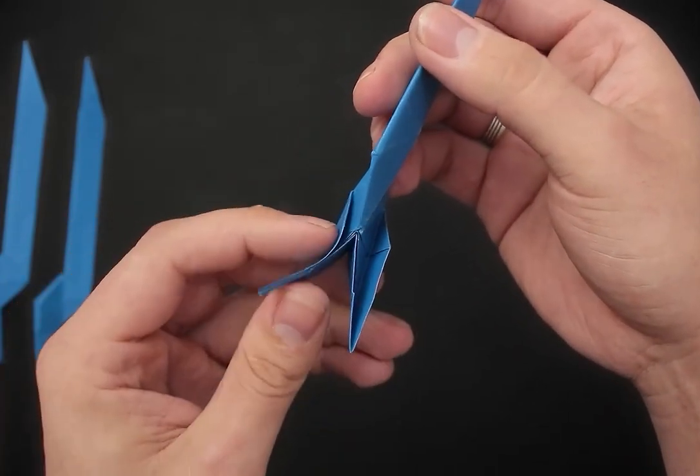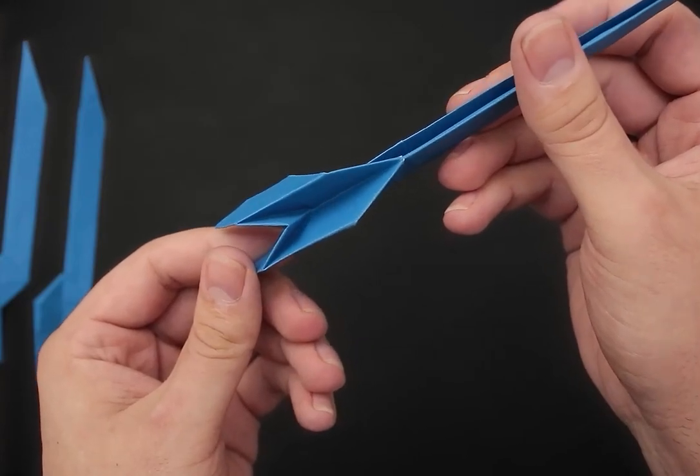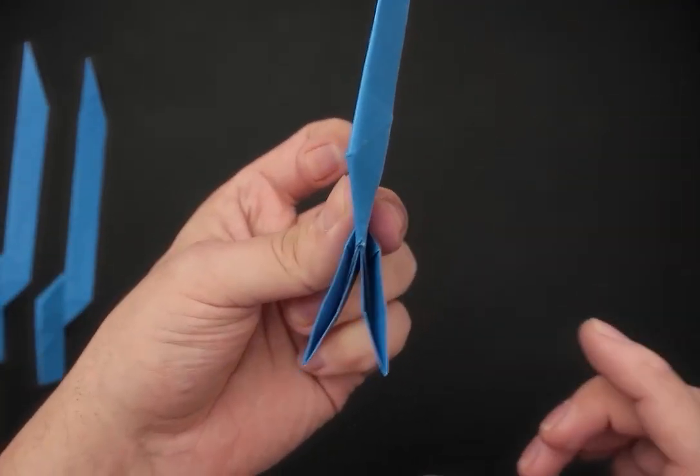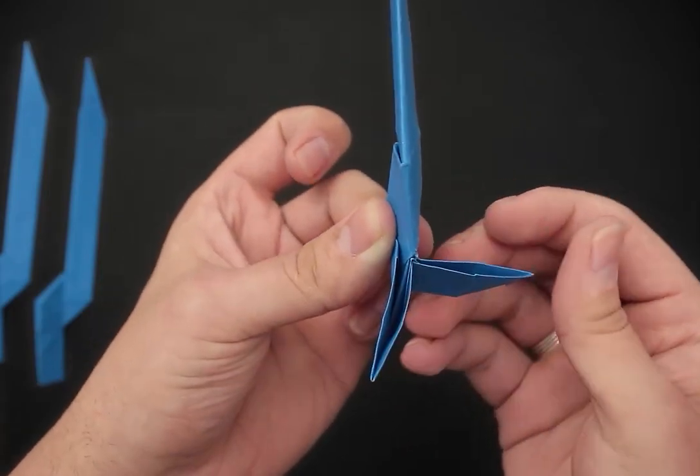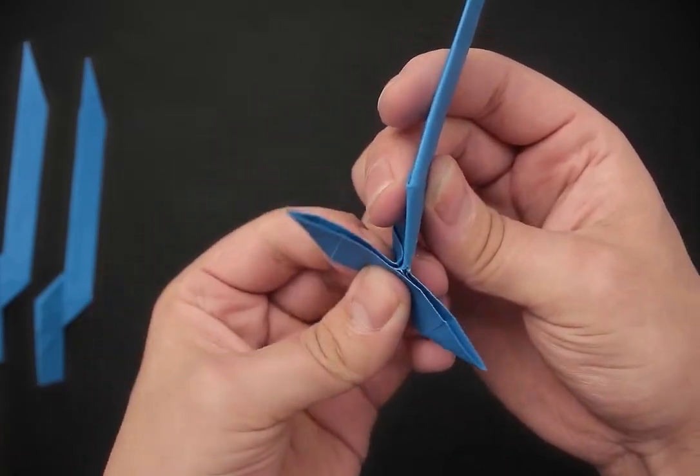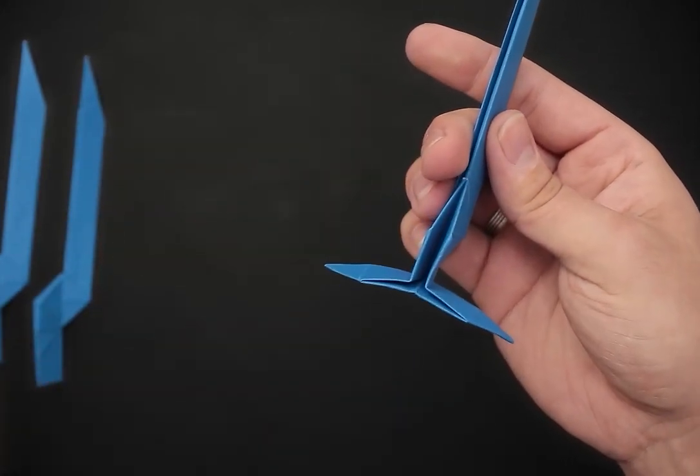Now we have two small flaps. As the last step we just need to open it. And we have the third piece.